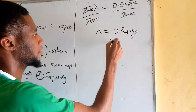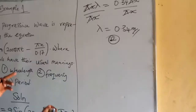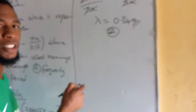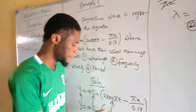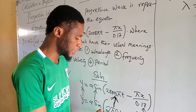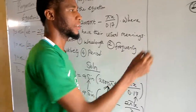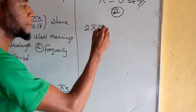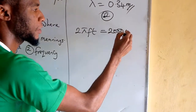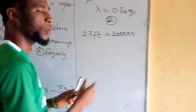Moving to question 2, we calculate the frequency using this particular equation. From the question, the frequency term corresponds to its matching term. We now have 2πft equal to 2000πt. Since we are looking for frequency, we divide both sides by 2πt.